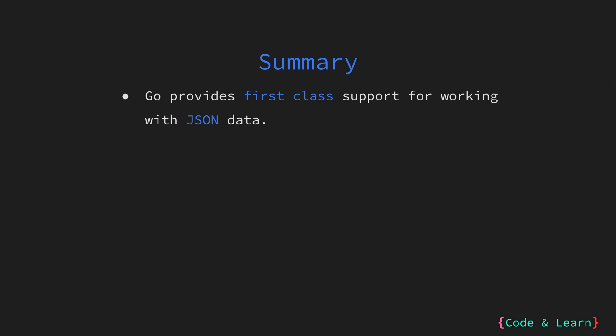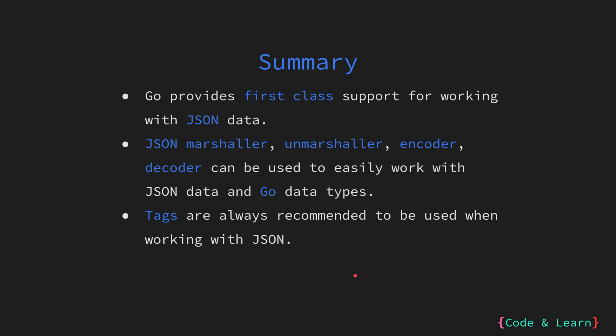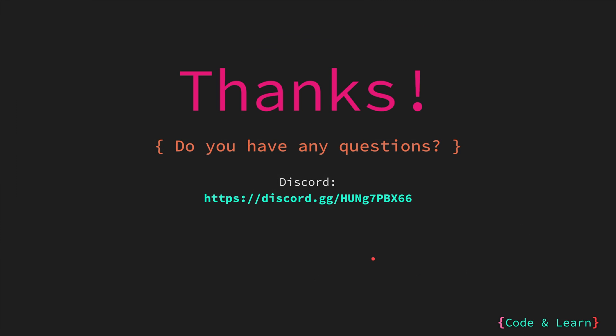That's it for this lesson. Let's now summarize everything we have learned. Go provides first-class support to work with JSON data through the standard library package encoding/json. We looked at various functions implementing the marshaler and unmarshaler, encoder and decoder interfaces, that can be used to work with JSON data and Go data structures. We also looked at JSON tags and how they are very helpful in defining the mapping between fields of Go data structures and their JSON field counterparts. That's it for the lesson. I hope you enjoyed it. Until next time, happy coding.